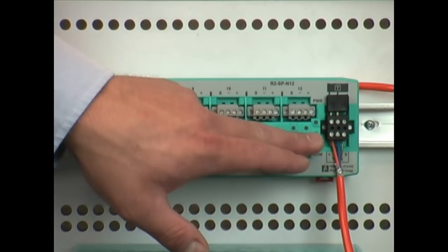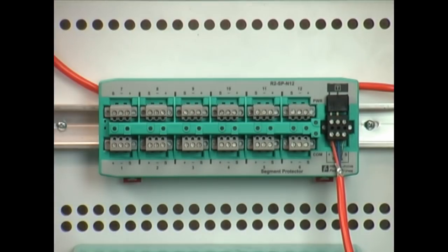Additionally you can daisy chain multiple segment protectors together using the trunk in and trunk out connection and these are used for safe area or Division 2 applications.